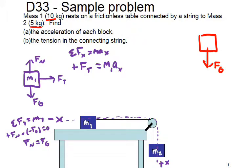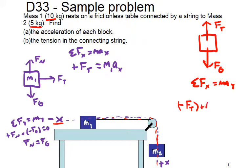For mass two, we have the force of gravity downward and the tension force upward. Setting up the sum of forces — on the x-axis, the tension force is actually pointing in the negative x direction. So we have negative force of tension plus positive force of gravity equals m2 times a in the x. We have two unknowns: tension and acceleration. We have two equations and two unknowns, so we need both equations to figure out what's going on.